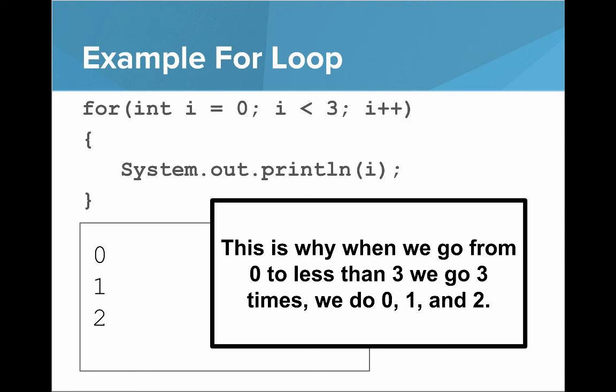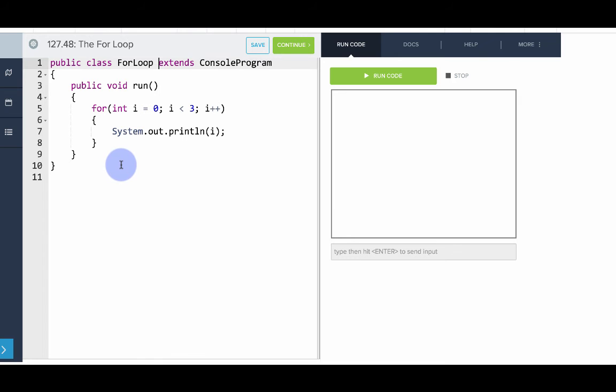But let's go into our code editor and look at this loop. Okay, so here we have this same for loop program and if I run it we'll see it prints out 0, 1 and 2.